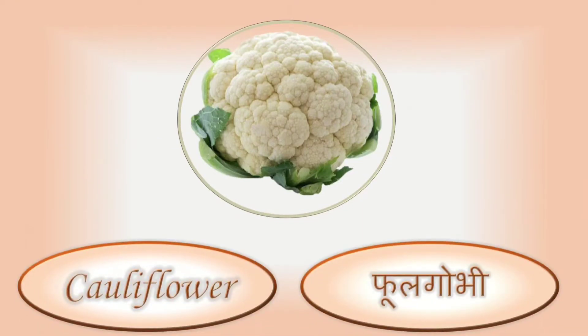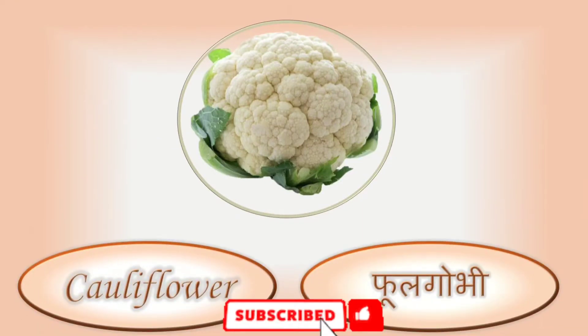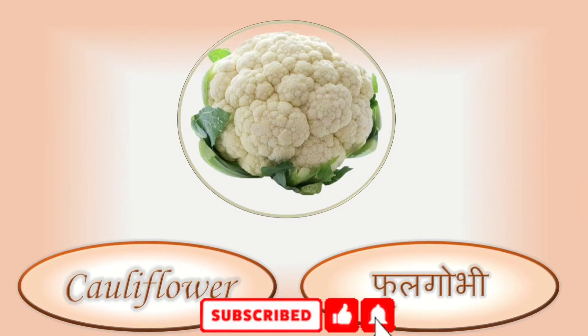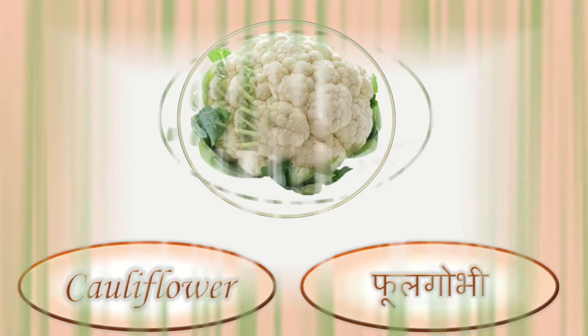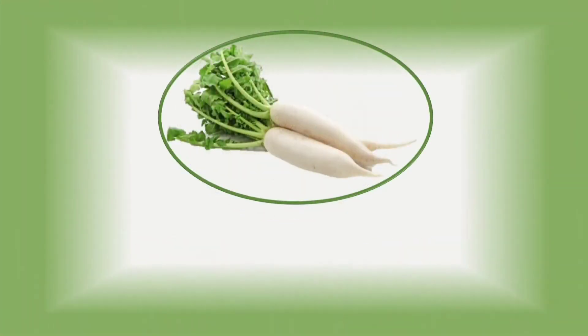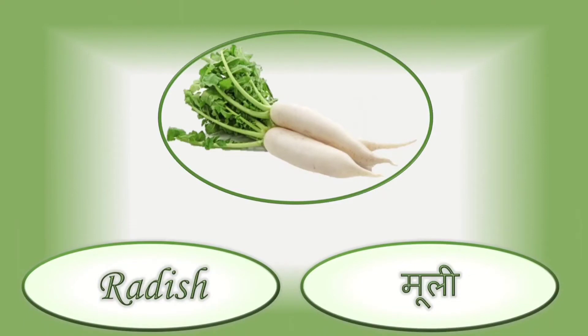Cauliflower — cauliflower means phulgobhi. Radish — radish means mooli.